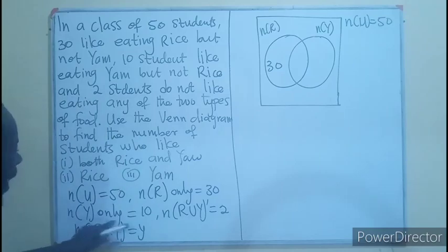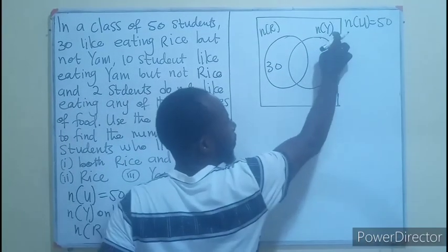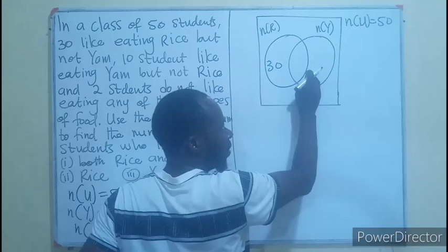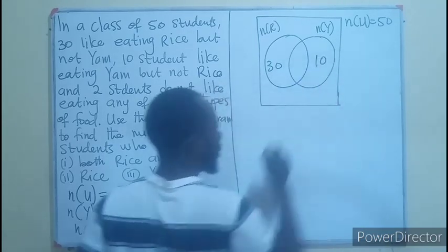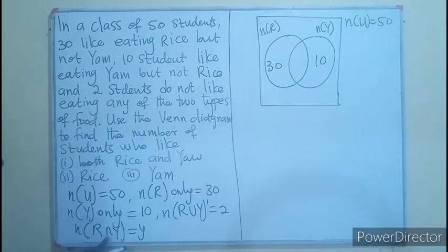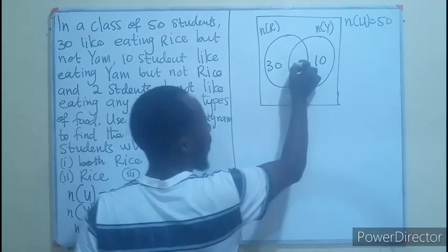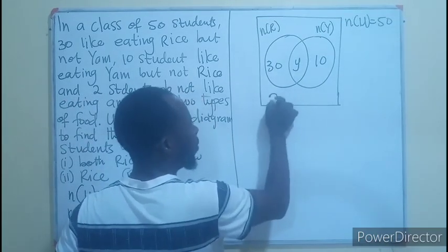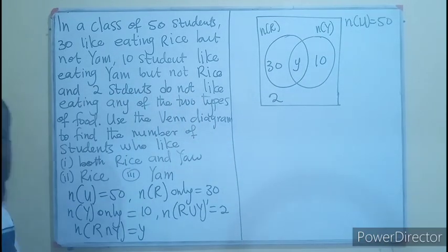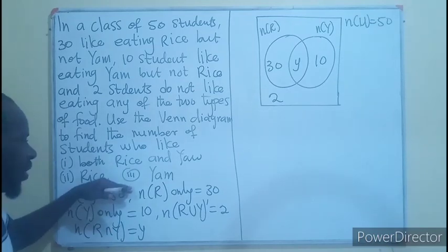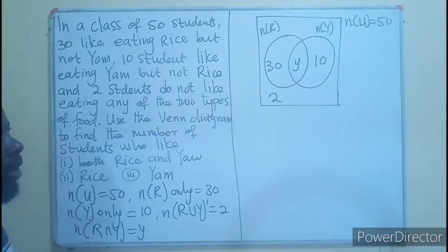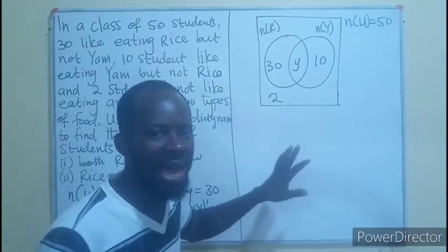Then, that of 10 will be yam, but not rice, meaning only this region, and that is also 10. Then, we are using intersection to be Y, then the complement to be 2. So, these are the four regions that we have, which have been listed in our preamble.